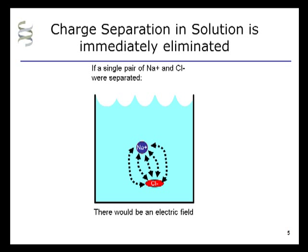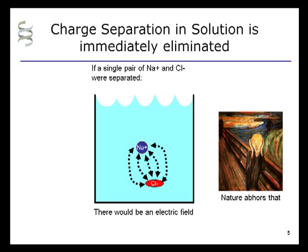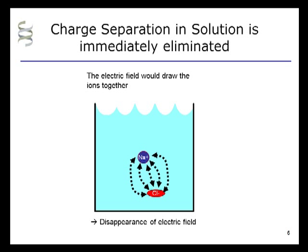If a single pair of a sodium and a chloride ion were separated, there would be an electric field. Nature abhors such charge separations, so any charge separation in solution is immediately eliminated. The way that happens is that the resulting electric field immediately draws the ions together, which leads to the disappearance of the electric field. So the reason there is no electric field is that any electric field is immediately eliminated.